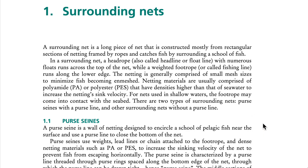The netting is generally comprised of small mesh sizes to minimize fish becoming enmeshed. Netting materials are usually comprised of polyamide or polyester, which have densities higher than that of seawater to increase the netting sink velocity. For nets used in shallow waters, the foot rope may come into contact with the seabed.